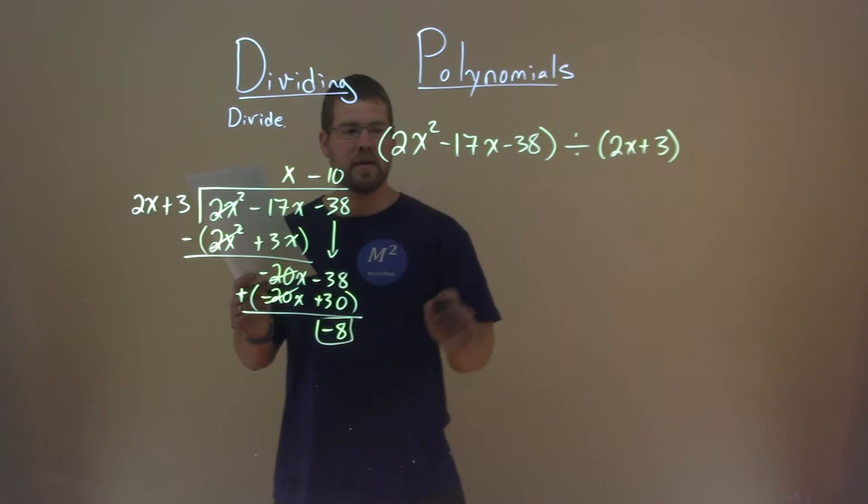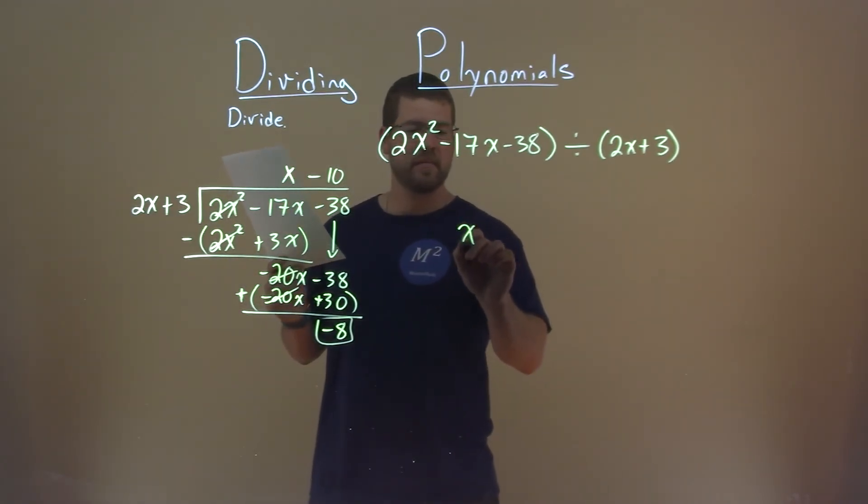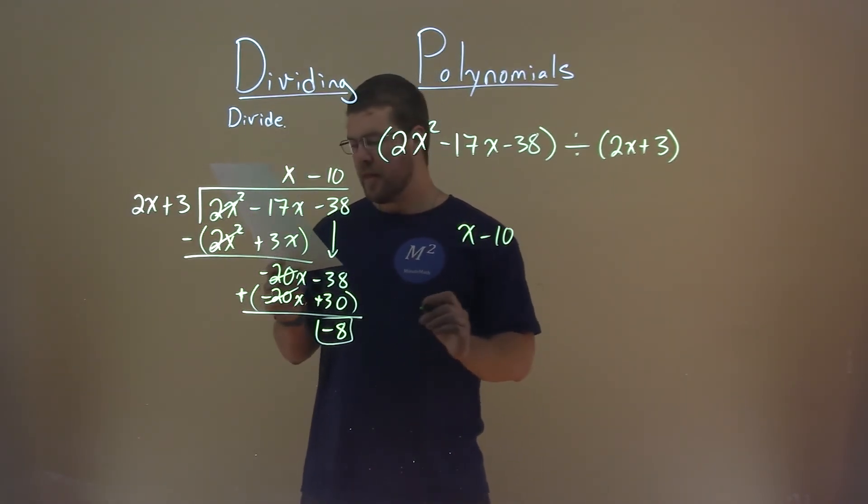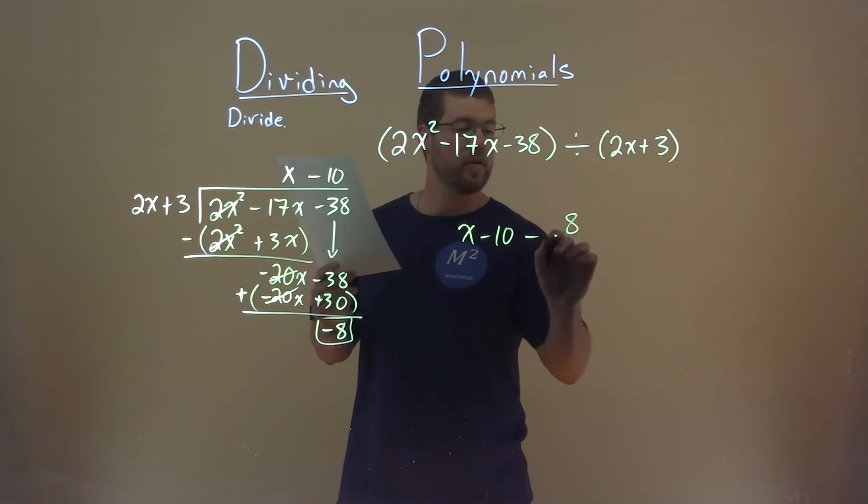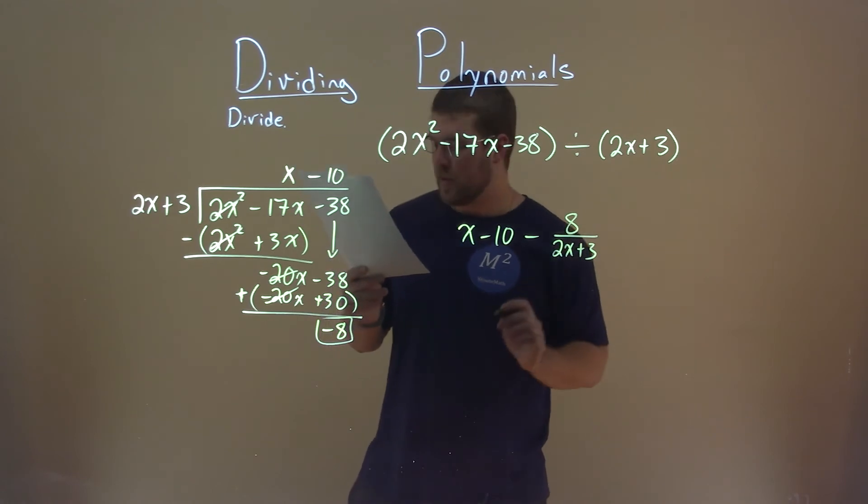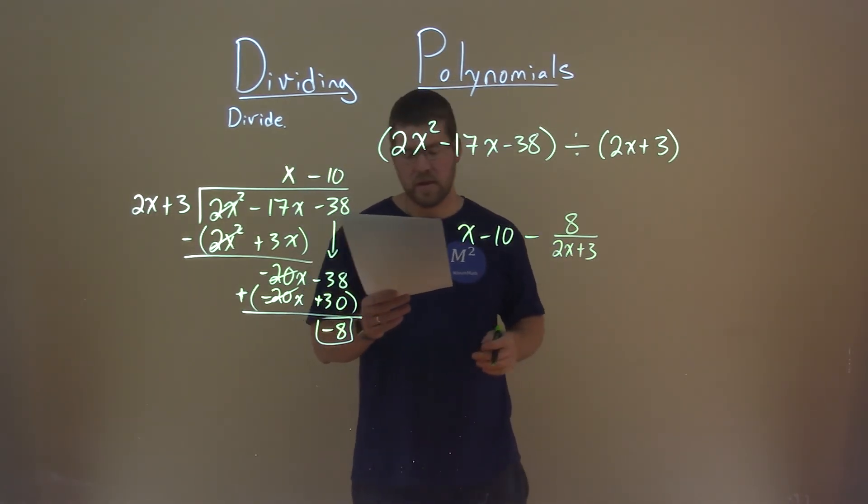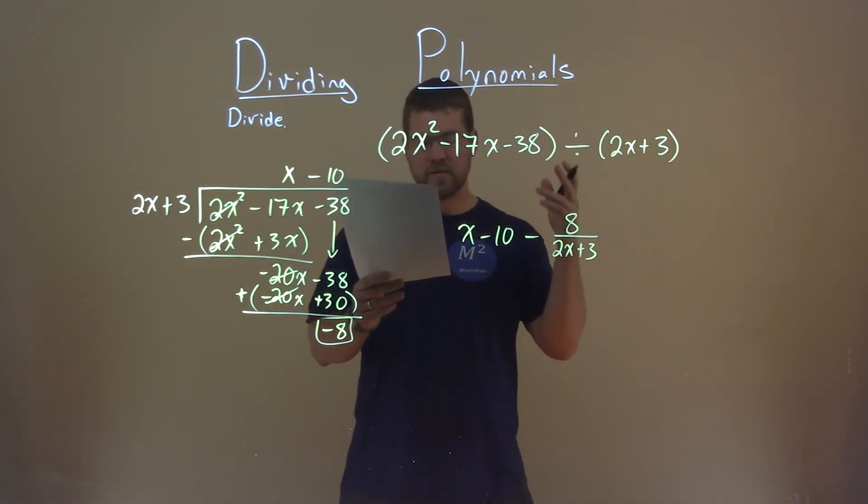So we're going to translate this to our answer. The x minus 10 goes right here. Then we have a minus 8 over what we were dividing by, 2x plus 3. And there's our final answer: x minus 10 minus 8 divided by 2x plus 3.